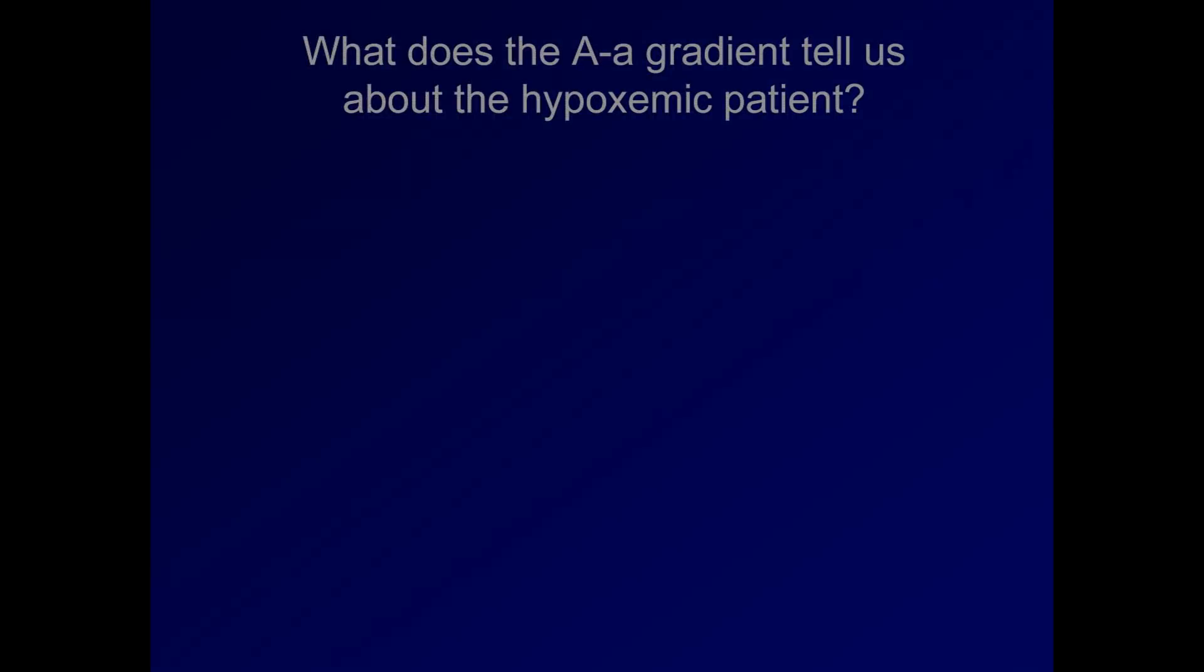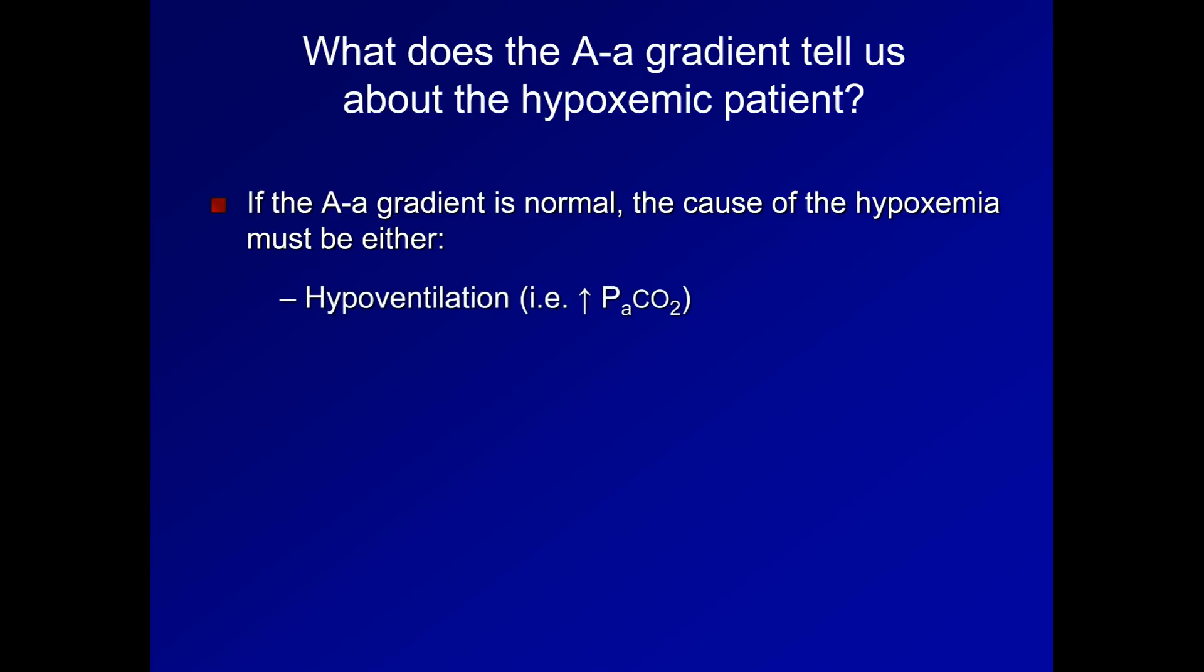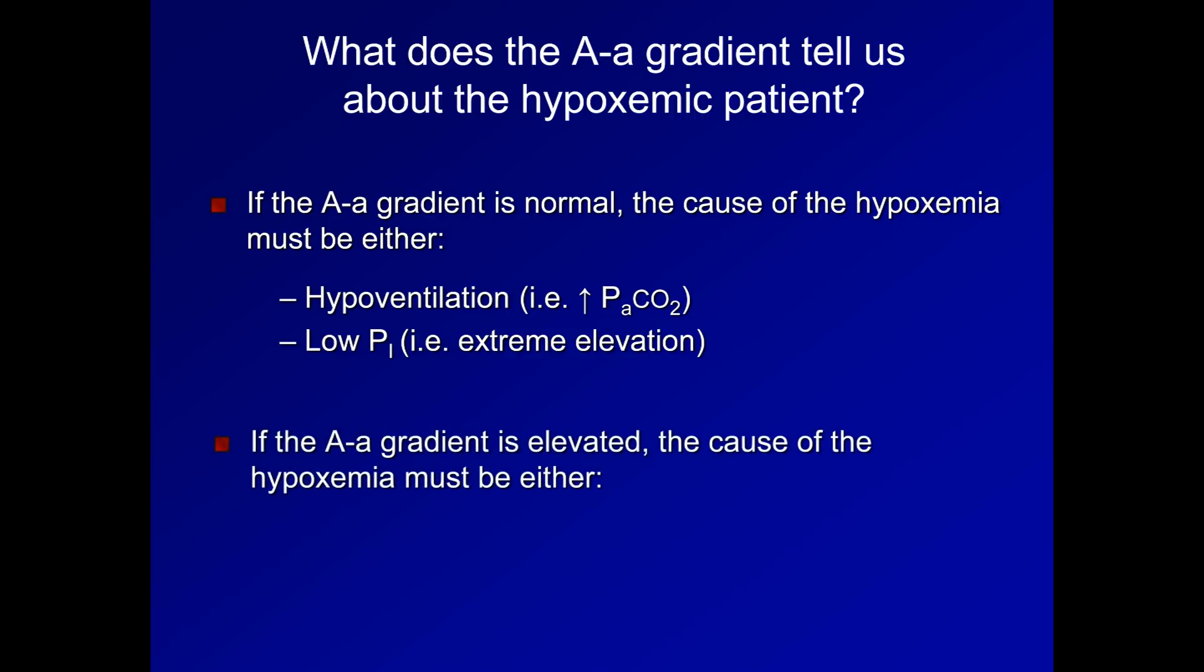So what does the AA gradient tell us about the hypoxemic patient? If the AA gradient is normal, the cause of the hypoxemia must be either hypoventilation, that is, increased PaCO2, or low barometric pressure, which would happen only at extreme elevations, as in greater than 10,000 feet above sea level. If the AA gradient is elevated, the cause of the hypoxemia must be either VQ mismatch, shunt, or impaired diffusion across the alveolar capillary membrane. All of these will be discussed in lecture 18.